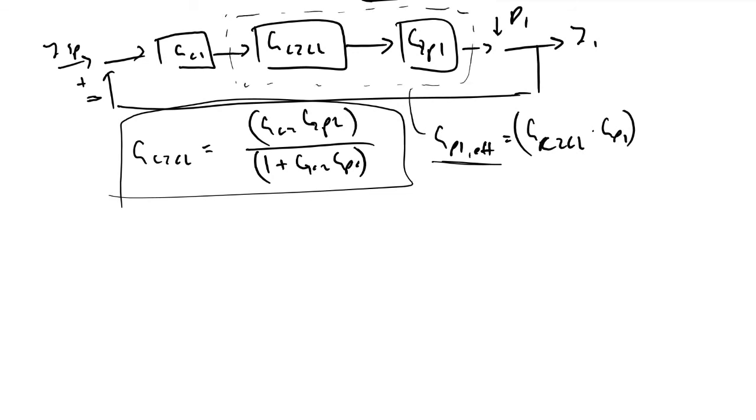We can now define the closed loop transfer function of our entire system. If we wanted to know what the response of our output is to our input, the output here is y1, the input would be sp, the closed loop transfer function will be equivalent to gc1 times gp1 effective divided by one plus gc1 gp1 effective. This will have a lot of terms, but this is the most condensed version. With this closed loop transfer function, we can begin to actually model our system.